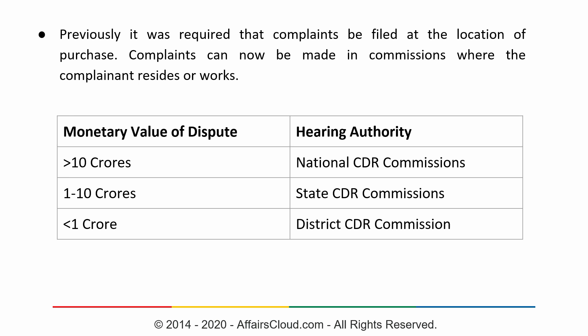Under the previous consumer protection acts, complaints had to be filed at the location of purchase. For example, if you are a resident of Chennai and purchased a good in Bangalore, you would have had to return to Bangalore to file a complaint. According to the new 2019 act, complaints can now be made in the commission where the complainant resides or works. So using the same example, you can file a complaint in Chennai even though the good was procured in Bangalore.